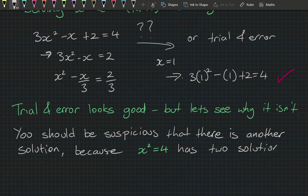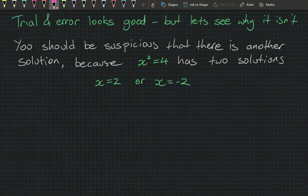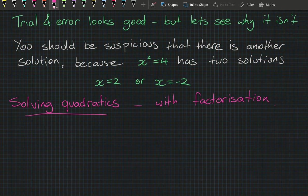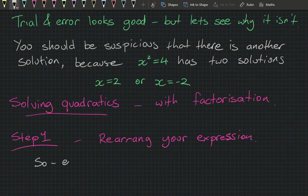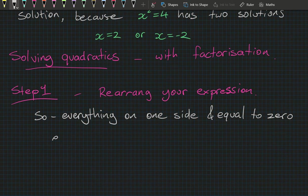Today we're going to learn all about solving quadratics with factorization. In the method we use, the first step is to rearrange your expression — putting everything on one side and having that equal to 0. For example, 3x squared minus x plus 2 equals 4 becomes, after subtracting 4 from both sides, 3x squared minus x minus 2 equals 0.